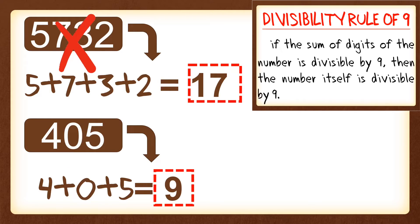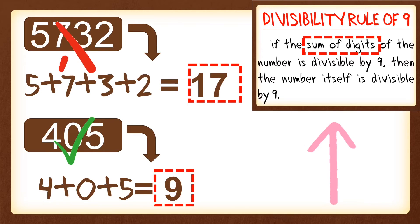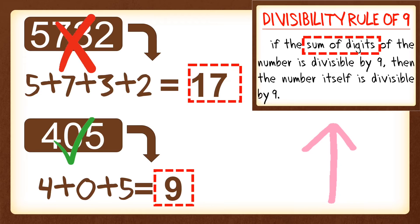A reminder: in the divisibility rule of 9, just get the sum of the digits and determine if that sum is divisible by or a multiple of 9.